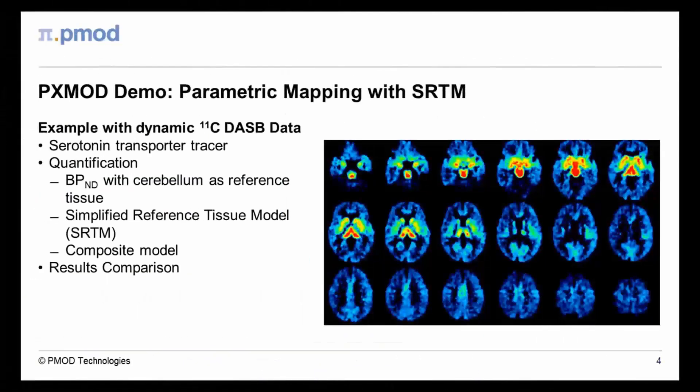The following three-minute demo will give you a brief impression of the Pixelwise Kinetic Modeling Tool. A dynamic PET dataset of DASB uptake will be analyzed, resulting in a serotonin transporter binding potential map. The map is first calculated using the simplified reference tissue model, then with a composite model.